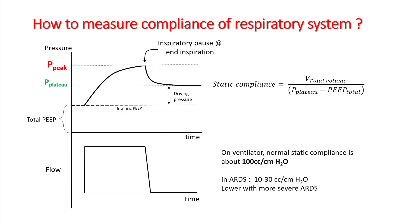This is also called static compliance. The way we measure compliance in the respiratory system is by applying an inspiratory pause at end inspiration and letting the pressure equilibrate in the lungs. The pressure slowly comes down and forms a plateau pressure, so static compliance equals tidal volume divided by plateau pressure minus PEEP, since PEEP is present throughout both the inspiratory and expiratory cycle.